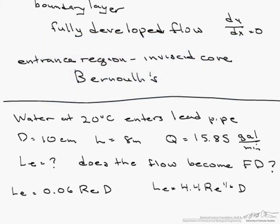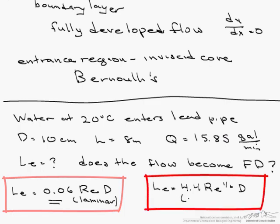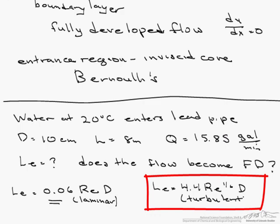So the two governing equations for this entry length depend on the flow regime. So this one right here is for laminar flow, and this one is for turbulent flow. So how do we determine whether we have laminar or turbulent flow? So let's take a look.